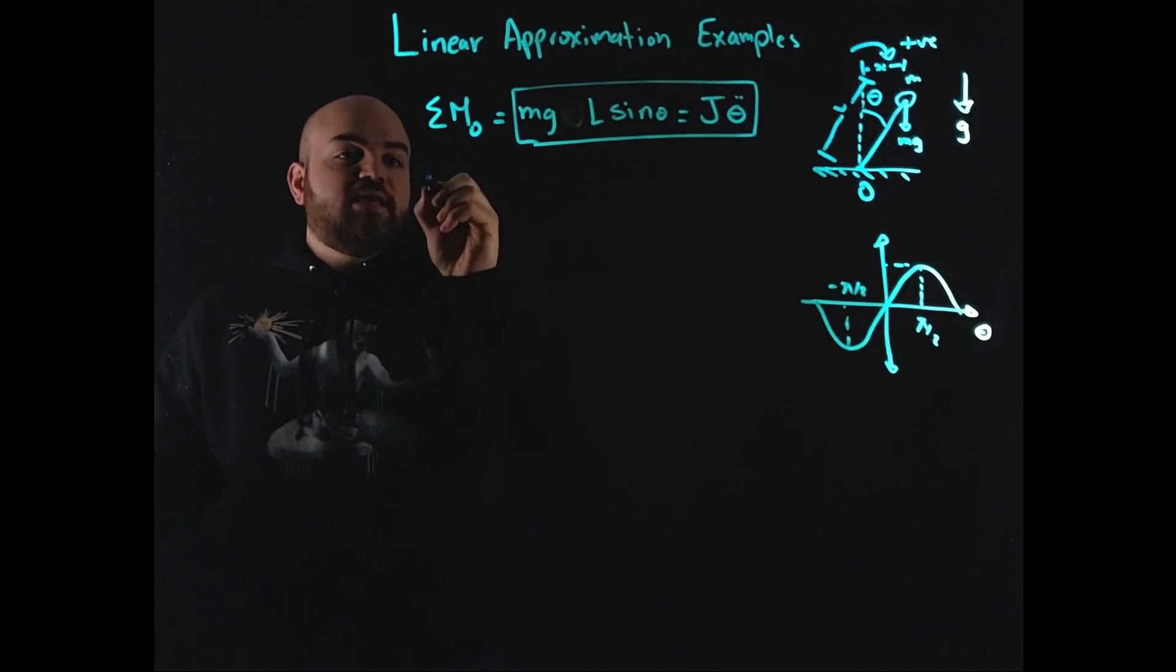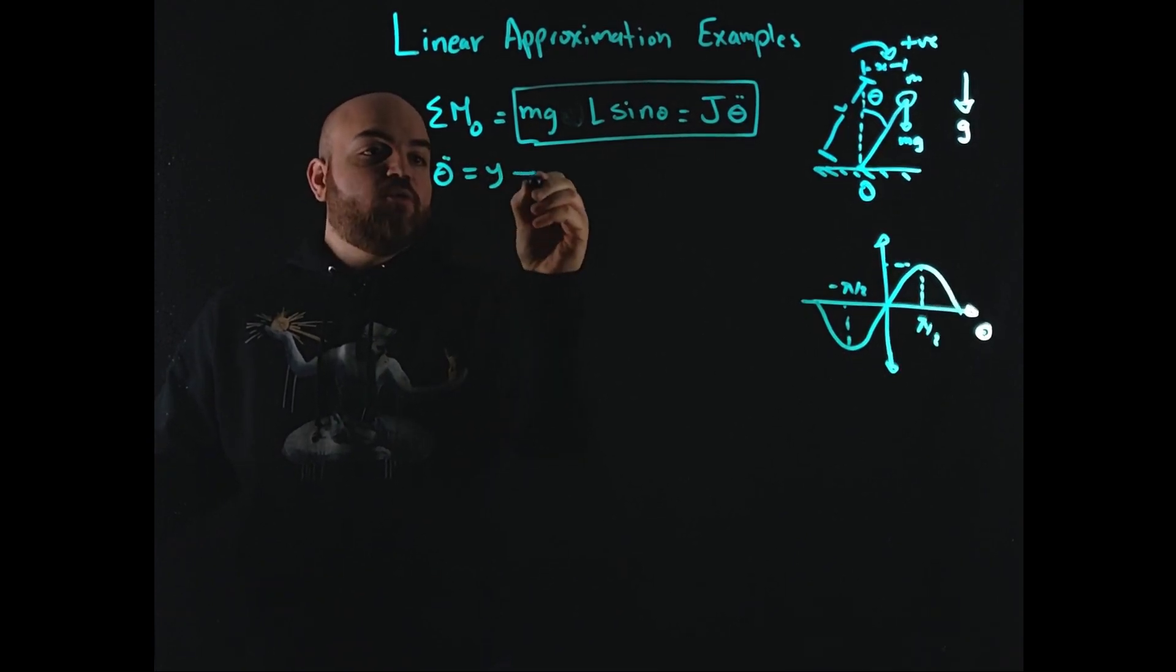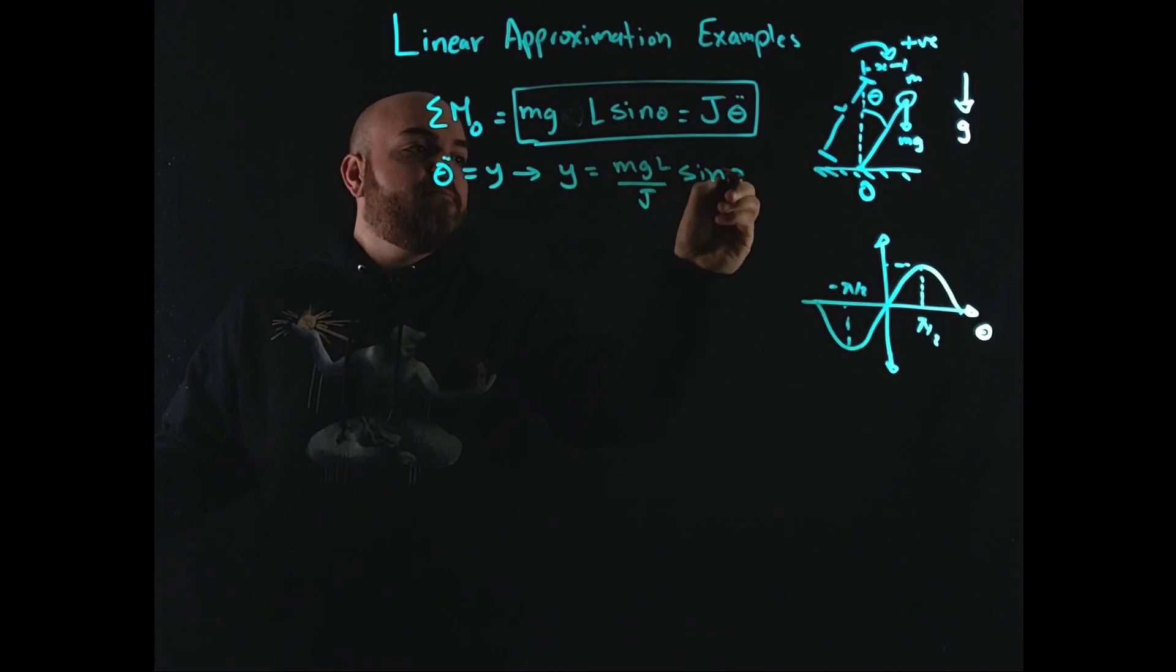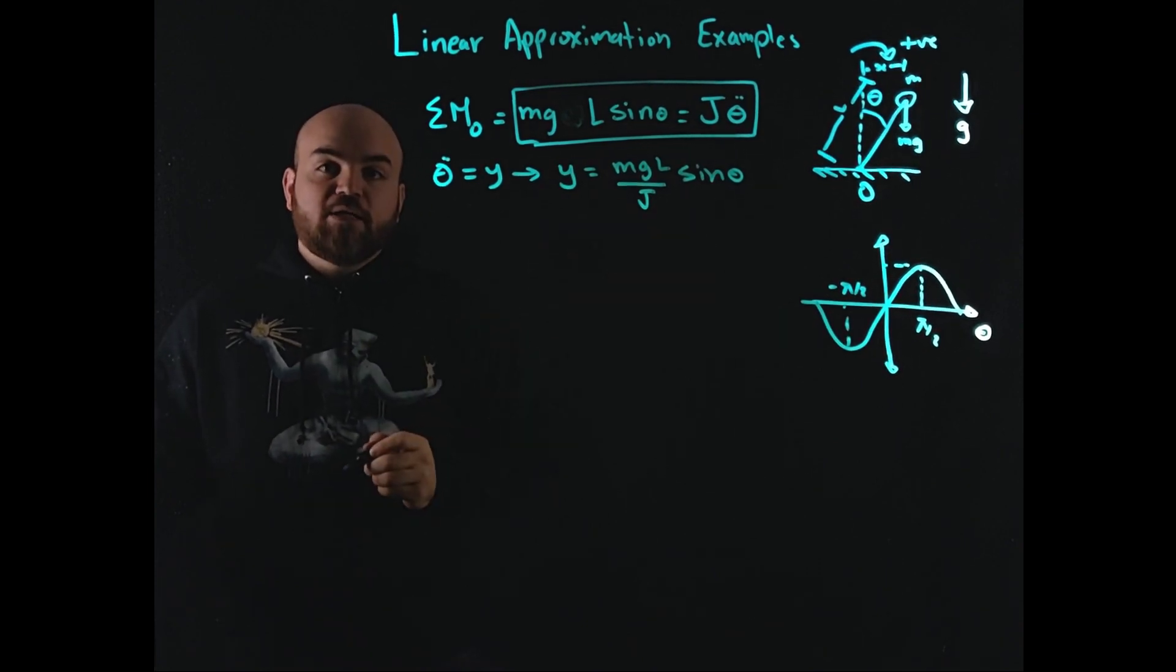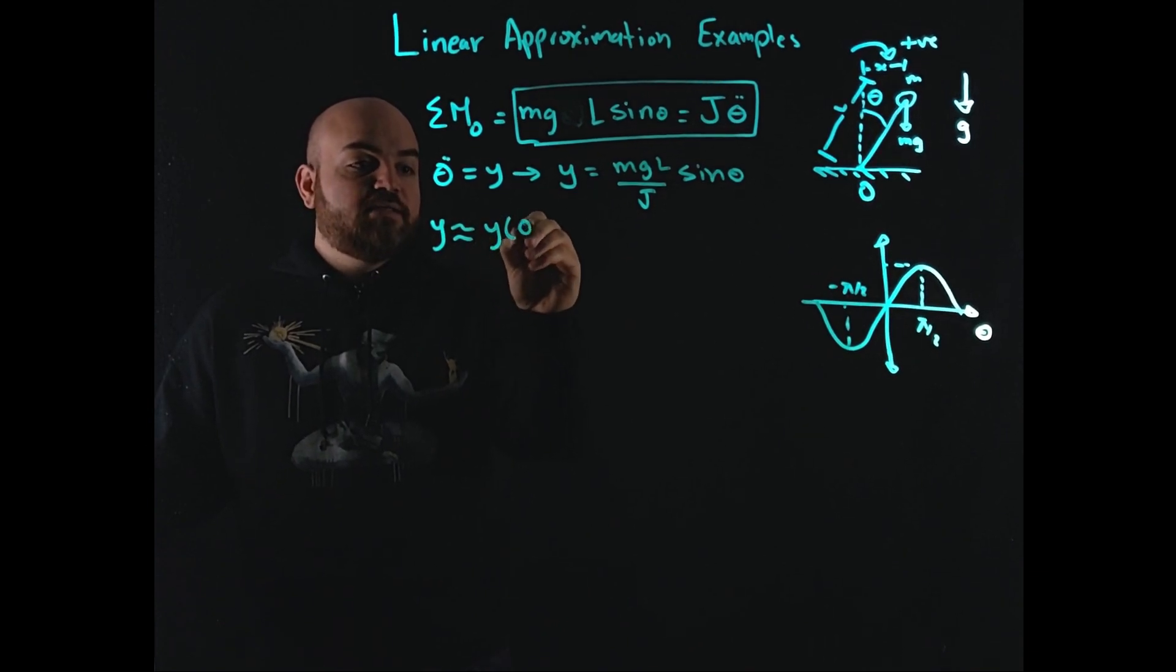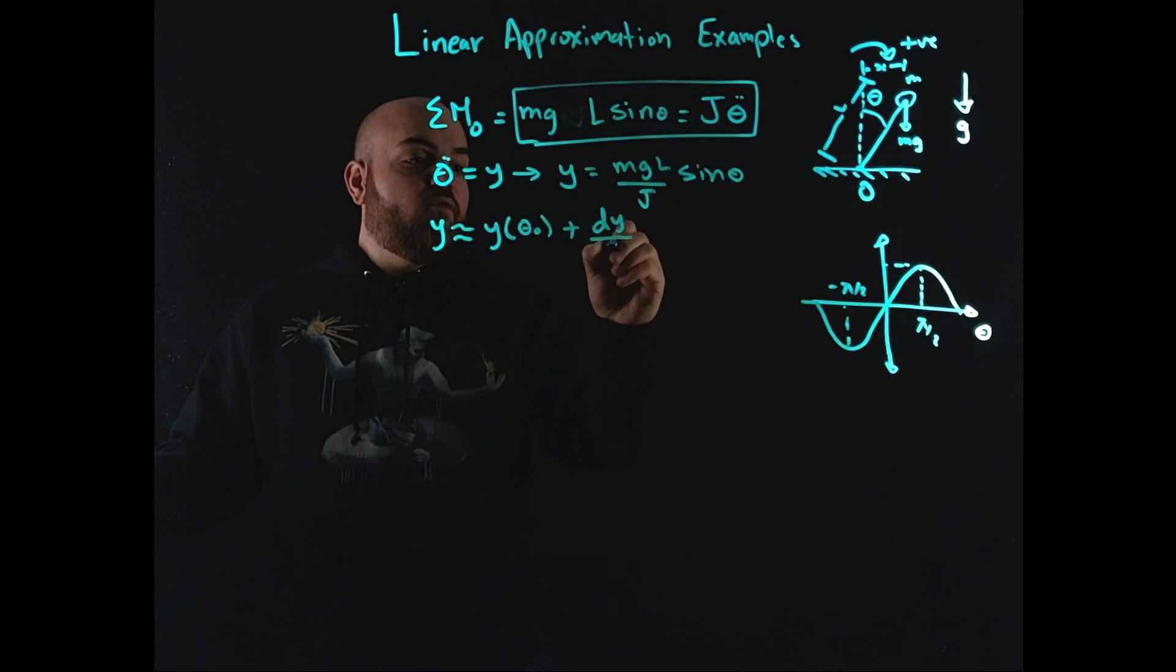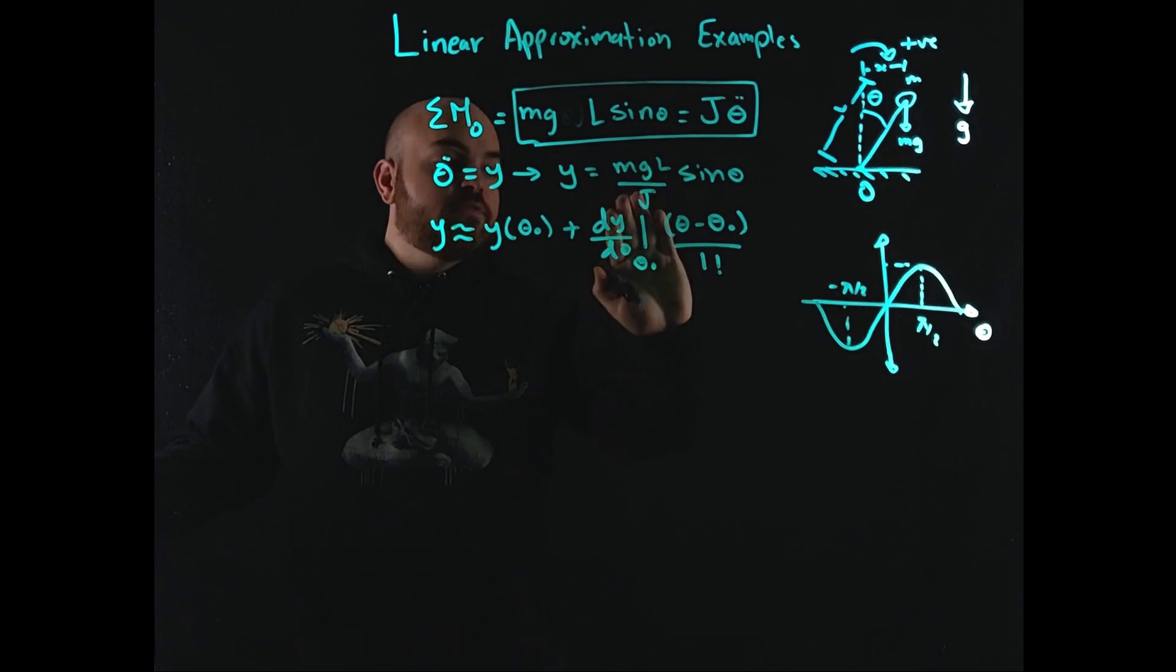Okay, so let's rewrite this and say, let's make a substitution for theta double dot as y. Let's just call it y. So we can rewrite this equation as y is equal to mg L over J times sine theta. And now we apply the concepts that we talked about in an earlier video of how I can linearly approximate this system at some operating point. We do the Taylor series expansion.